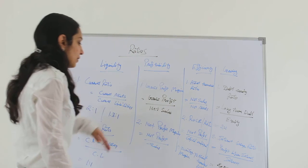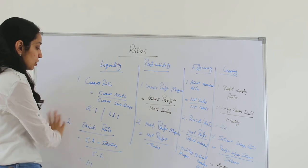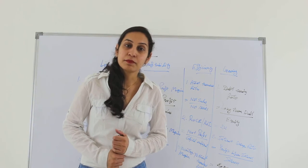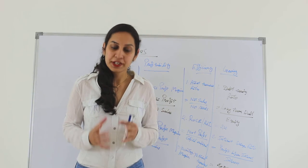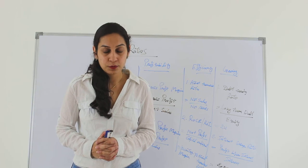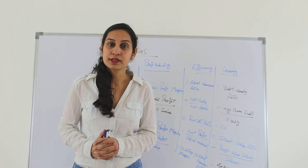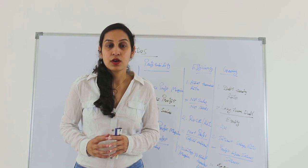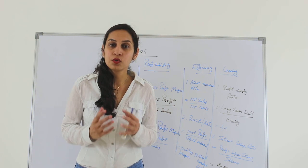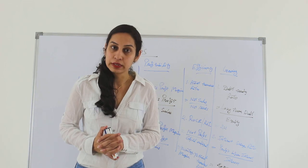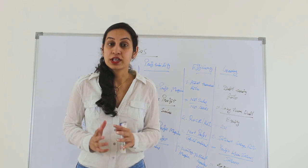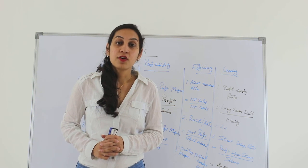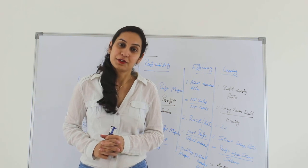In nutshell, this is what we have discussed: the main ratio categories — liquidity, profitability, efficiency, and gearing. As mentioned at the beginning, it's important to remember the formulas for examination purposes, but for practical purposes it's even more important to understand the significance — why we calculate each ratio and how to look beyond the ratios to understand their meaning. That's all about today's session on ratio analysis. I'll see you soon in the next class. Till then, stay tuned. Thank you.